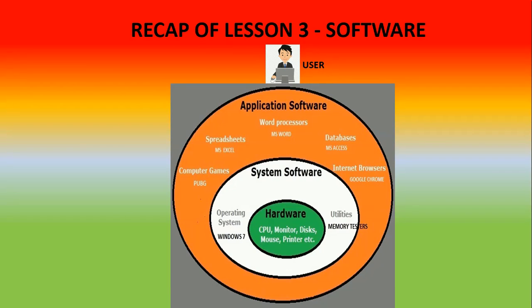One example written here is Windows 7 as an operating system, and memory testers as an example of utilities. Operating system is mandatory in the system — without it the computer cannot work. In the orange part of the circle some software are written. The first one is computer games; one example here is PUBG. Computer games are also application software made for entertainment purposes.